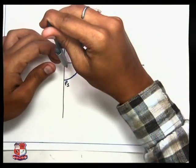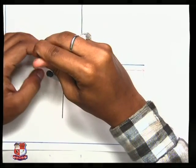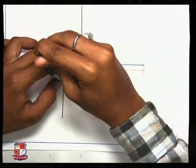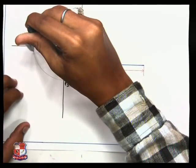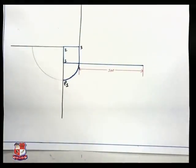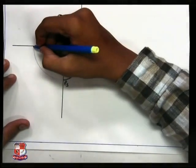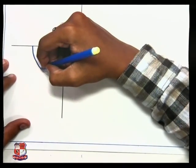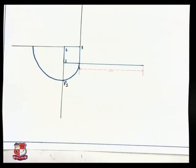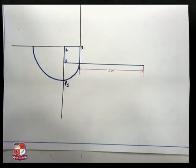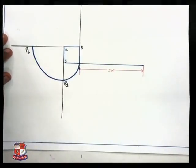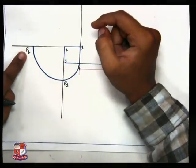Take 2 as center, 2-P1 as radius, and draw the arc. Likewise, now give the name P2 to this point.